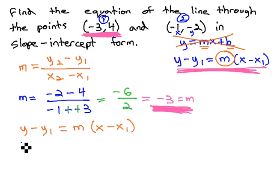y minus y₁ equals m times (x minus x₁). Plugging in our given information, we get y minus y₁, which is 4, equals m, which is negative 3, times x minus x₁, which is negative 3. Minus negative 3 is the same as adding 3, and we finally have an equation of the line that goes through the points (-3, 4) and (-1, -2).